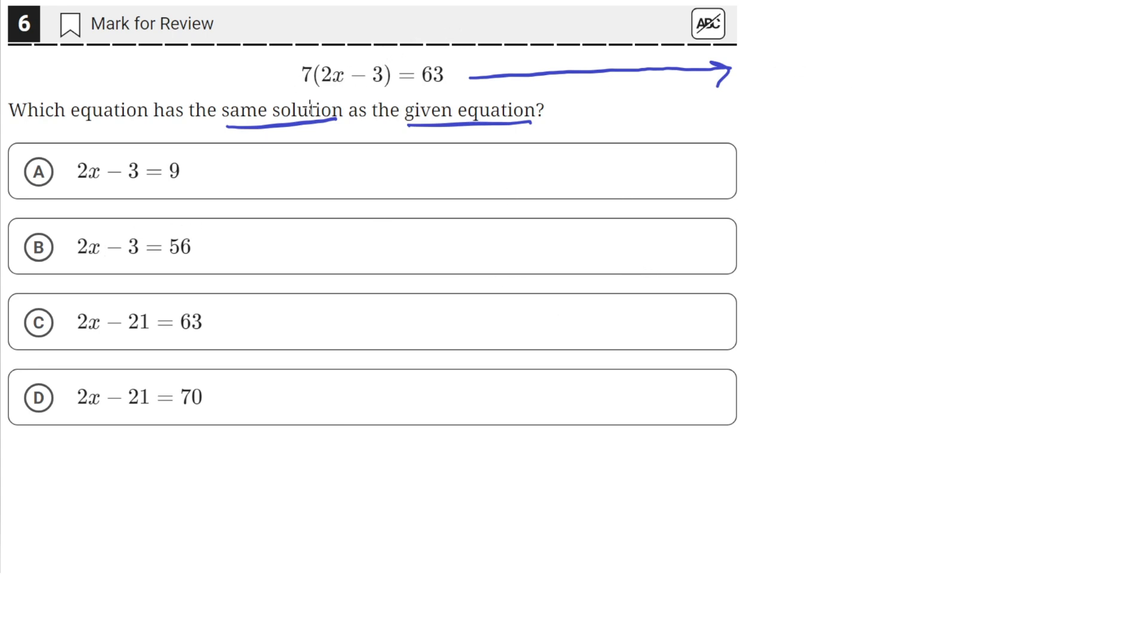Because if we just manipulate the equation while keeping the equation true, and it equals one of the answer choices, then we know that they have the same solutions.